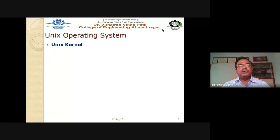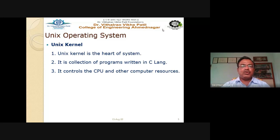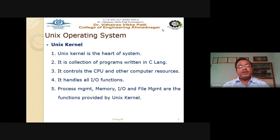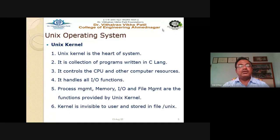The UNIX kernel is the heart of the system — a collection of programs written in C. The kernel controls the CPU and other computer resources, and handles all I/O functions. All operating system functions — process management, memory management, I/O management, and file management — are handled by the UNIX kernel. The kernel is invisible to the user and is stored in a file called /unix.